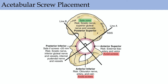For acetabular screw placement, you want to stay in the safe zone — the posterior superior zone. The zones are made by drawing a line from the ASIS through the center of the cup, then a perpendicular line. Screws between the anterior superior iliac spine and posterior superior iliac spine are pretty safe. For revision scenarios, put screws wherever you can get fixation. Know the dangers for the anterior superior and anterior inferior zones.